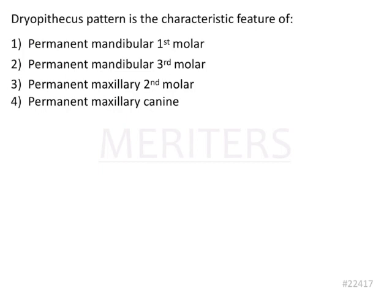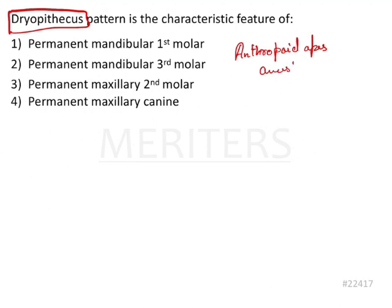The Dryopithecus pattern is a characteristic feature. First of all, we should understand what Dryopithecus is. It is basically a kind of occlusion morphology which is seen in the mandibular molars, and was generally seen in the anthropoid apes and their ancestors, who were also known as Dryopithecus.